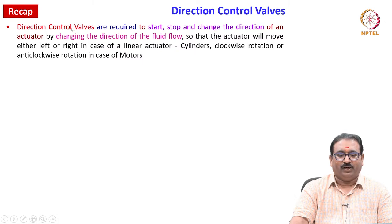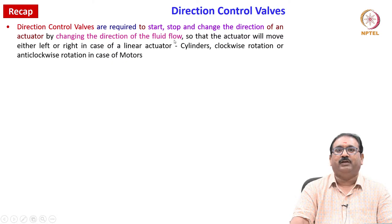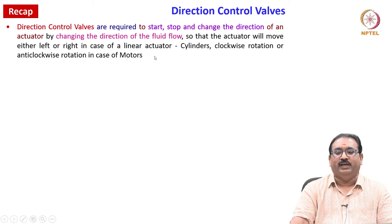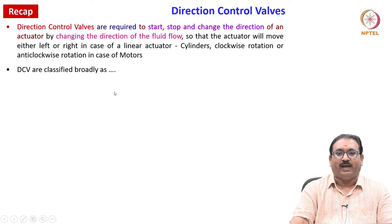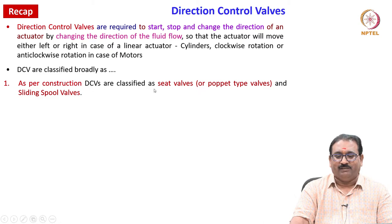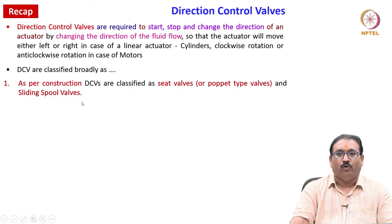Quickly we will recap what we studied on directional control valves in the last class. Directional control valves are required to start, stop and change the direction of an actuator by changing the direction of fluid flow, so that the actuator will move either left to right in case of linear actuator cylinders, or clockwise/anti-clockwise rotation in case of motors. DCVs are broadly classified as per construction as seat valves or poppet valves and sliding spool valves.